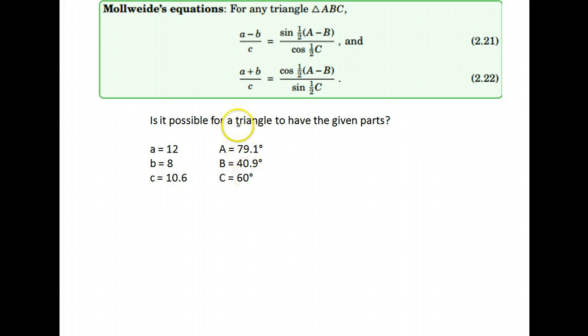You could use multiple methods for testing this, but in your text they give us what's called the Mollweide equation. It includes all six parts of the triangle - a, b, c and angle A, angle B, and angle C. When we're using this, lowercase a is the side opposite angle A in the triangle, lowercase b is the side opposite angle B, and lowercase c is the side opposite angle C.